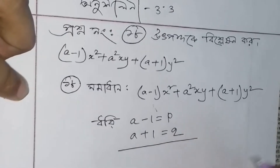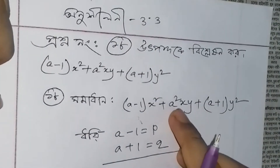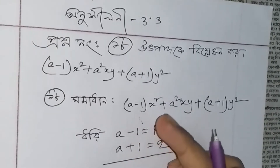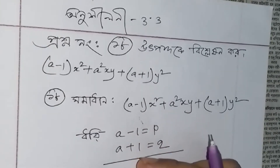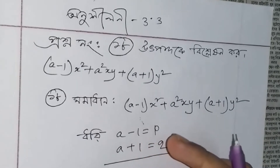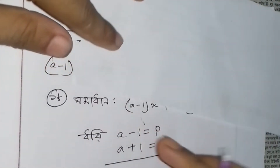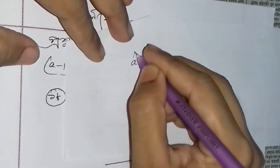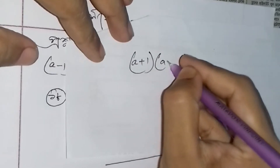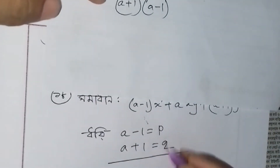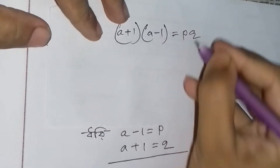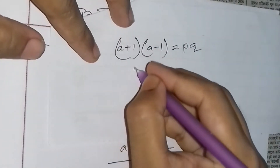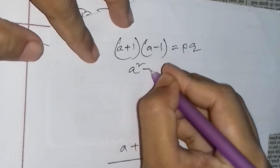Ehi dhuto theke a square-er maan banate hovhe. Toh amurah jahani jhe a iduto ke jodhi gung kori, toh (a plus b) into (a minus b) = a square minus b square — e shutra ahshe. Toh (a plus 1) into (a minus 1) = pq. Jodhi gung kori ehi dhuto ke, taha halen pq. Asbhe taha halen a square minus 1.